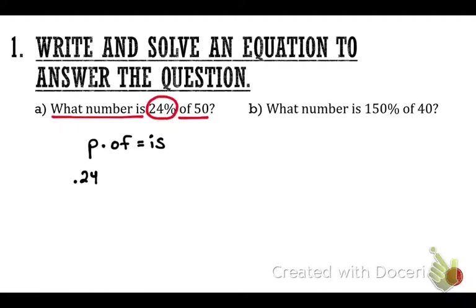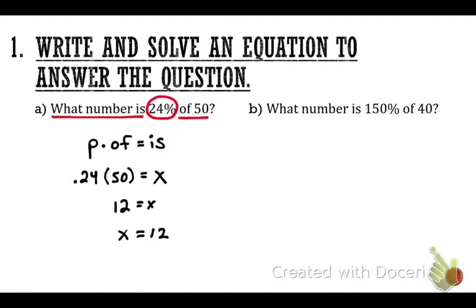The equation is 0.24 times 50 equals x, since we don't know the is. If you're practicing with calculators, you'll also be able to use one on a quiz or test. What is 0.24 times 50? 12. So x equals 12, and that's our answer.